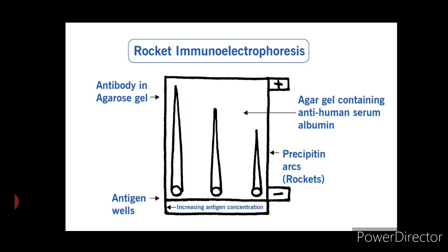In the example shown, human serum albumin is present at relative concentrations from left to right in the ratio of 3 to 2 to 1.